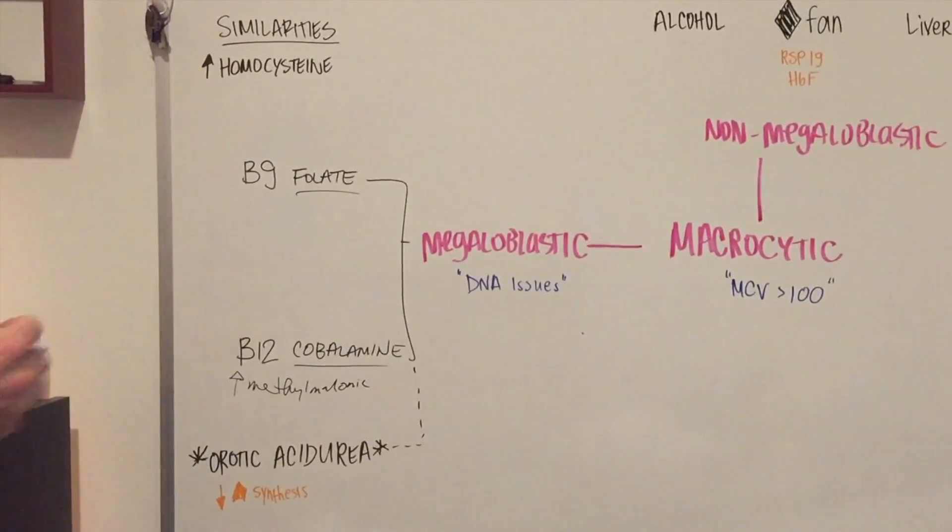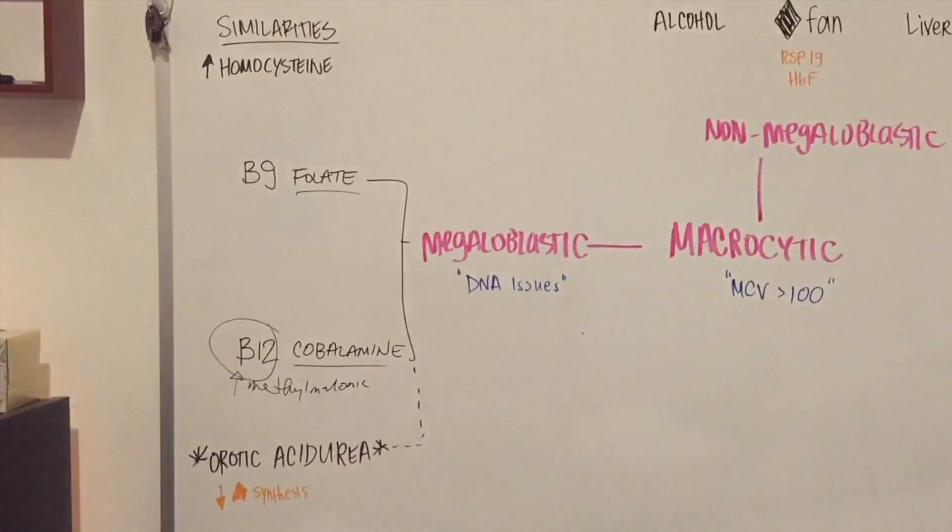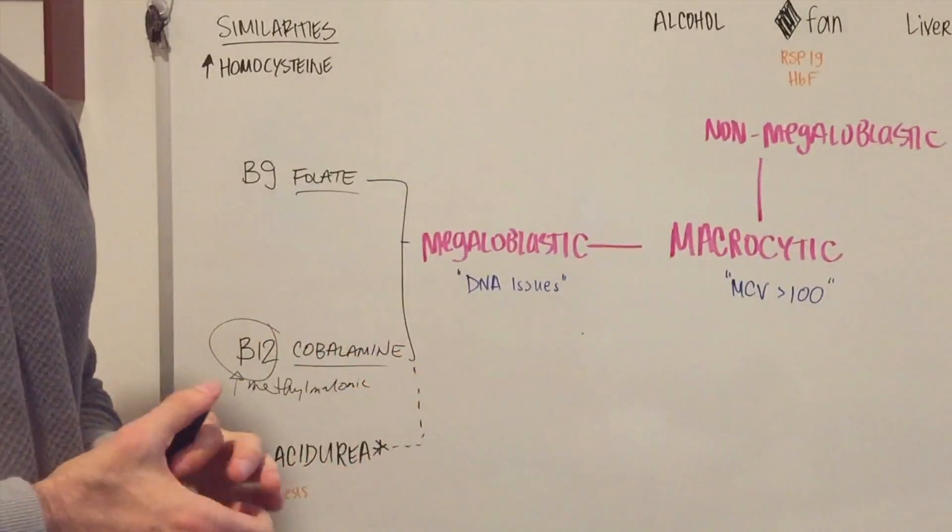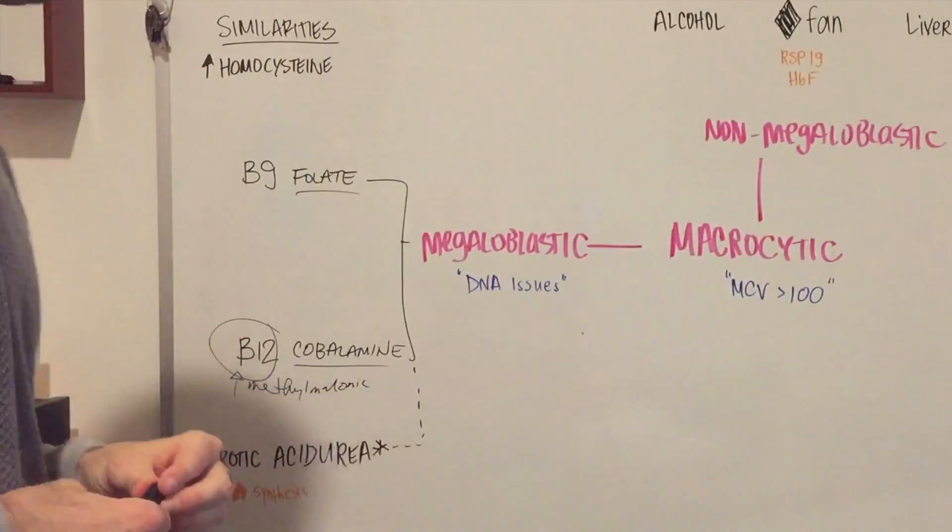So some things I also want to talk about for B12. Now, it is very interesting, and it can actually be caused in different ways, and this is actually done by using the Schilling test, which is a test to determine why you're having a low level of B12.